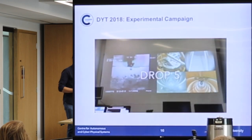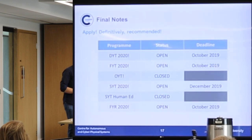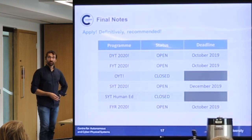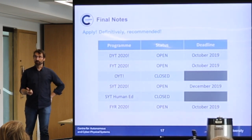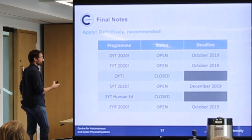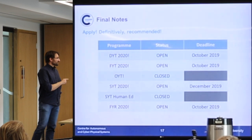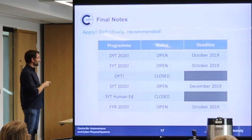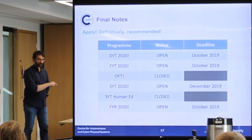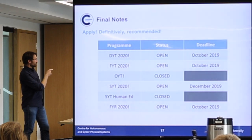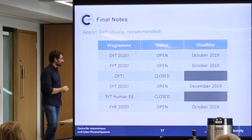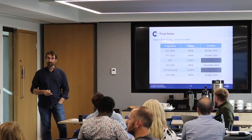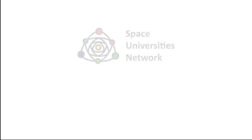They had two successful drops, and were then given two additional drops in February 2019. As a final note, many of these gravity programs are currently open for proposals: Drop Your Thesis closes in October 2019, Fly Your Thesis also closes in October 2019, Orbit Your Thesis is currently closed, and Spin Your Thesis closes in December 2019. There's also a new program called Fly Your Rocket, about rocketry, which also closes in October 2019.